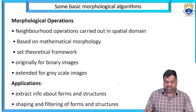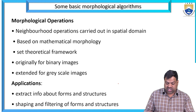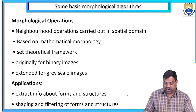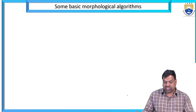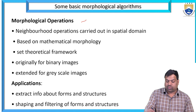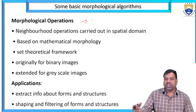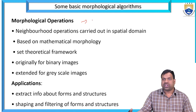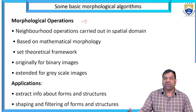The applications of morphological operations include extracting information about forms and structures, and shaping and filtering of forms and structures. When we are going for morphological operations, operations mean erosion, dilation, closing, opening, hit-or-miss transform. Suppose one image is there — we want to convert white pixels into black and black pixels into white. How is it possible? These are the morphological operations.